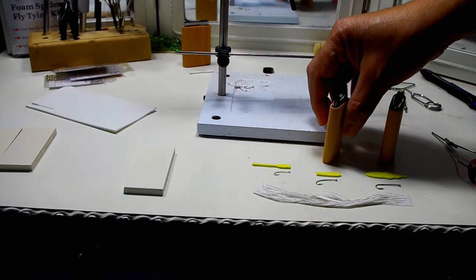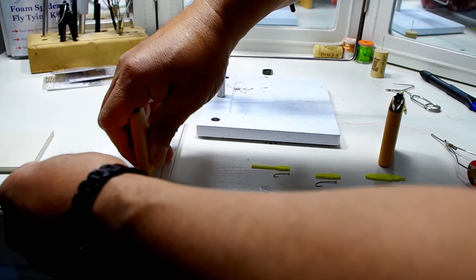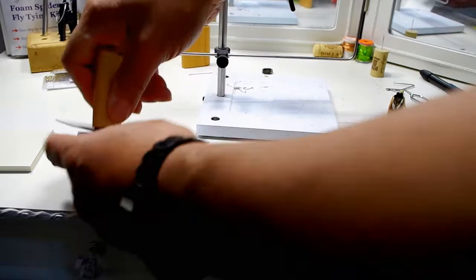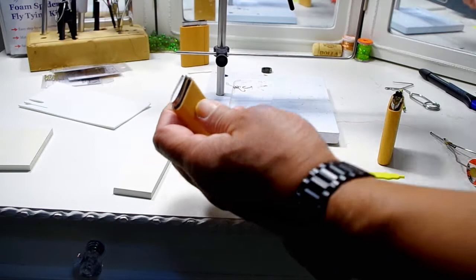Here's the little hopper. Stonefly or hopper pattern. We'll just do the same thing here. Just line it to the edge and then push and it's a very sharp blade. There it is.